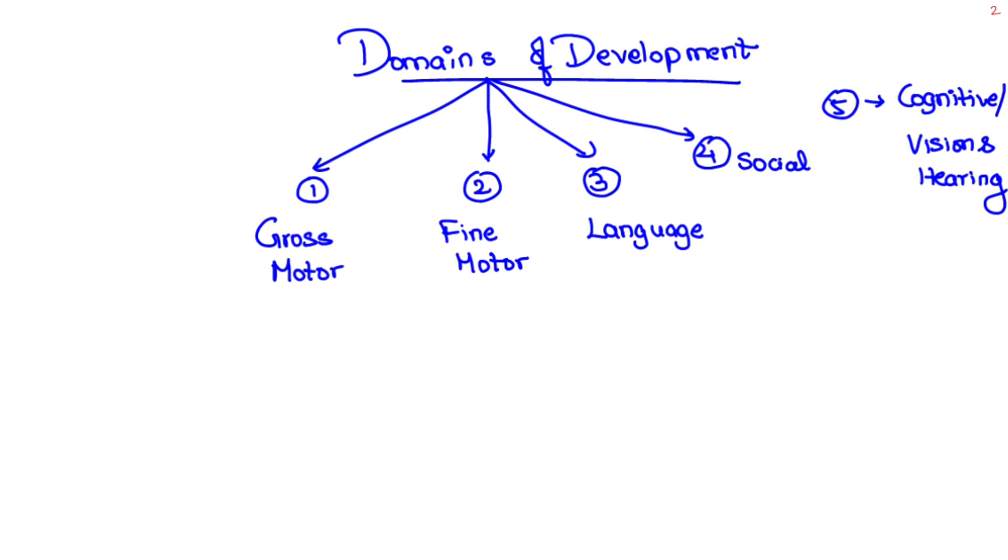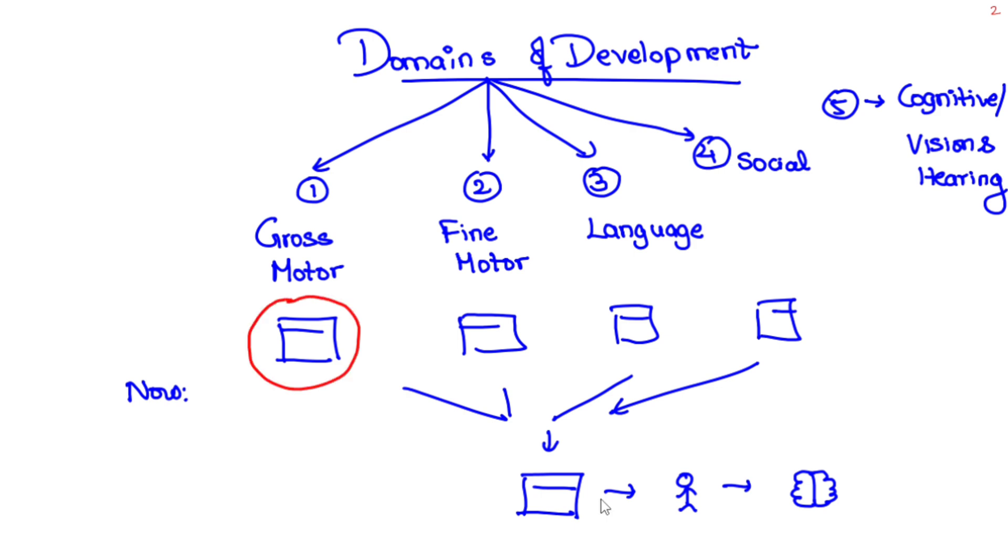Instead of remembering them separately, I clubbed them together and made a story. I bet you won't forget this. Here, gross motor represents big movements, fine motor represents movement occurring at the level of hand, whatever sound comes out of baby's mouth and hearing is considered as language, and how the baby reacts or interacts with the surrounding is social. Let's start.